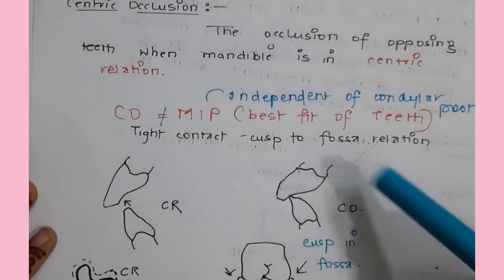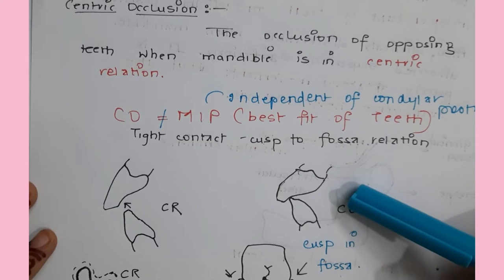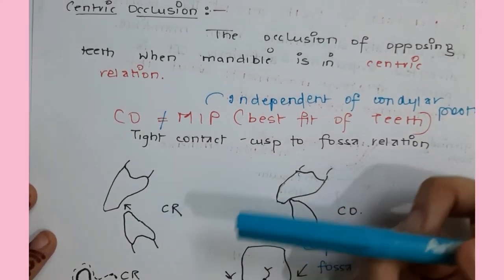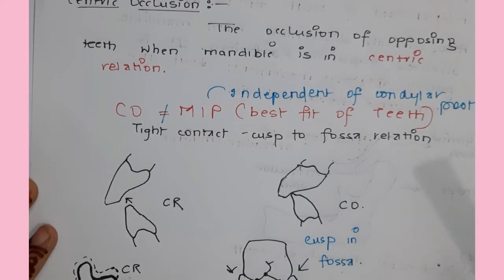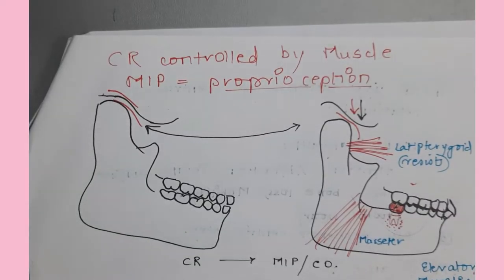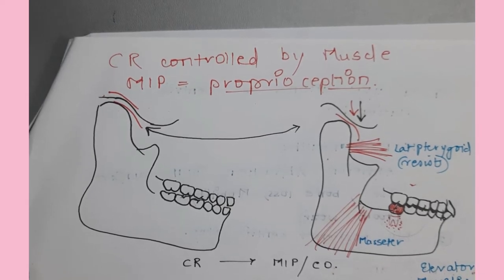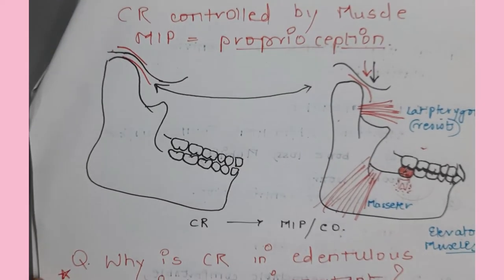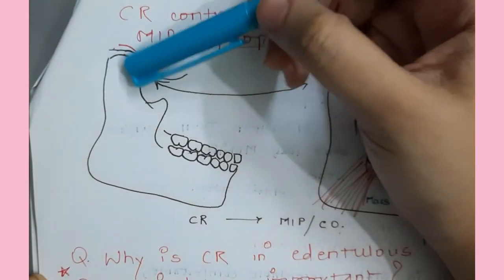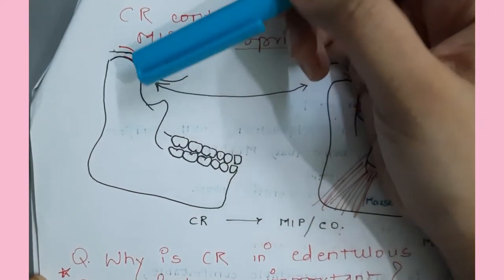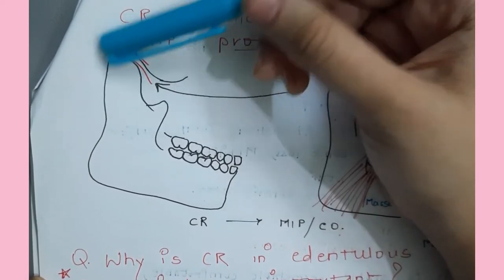In centric occlusion, there is tight contact with no freeway space, and there is a cusp-to-fossa tight relationship. In centric relation, we have freeway space. Centric relation is controlled by muscles and proprioception - there are no teeth in centric relation; the condyle is in the anterosuperior position along the posterior slope of the articular eminence.